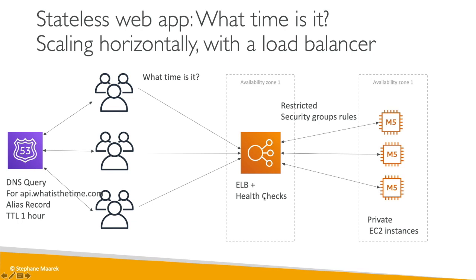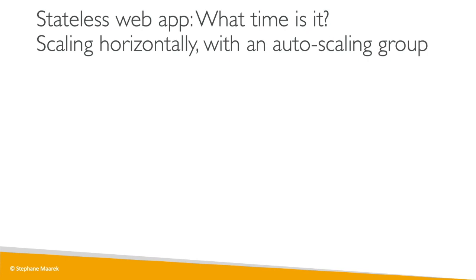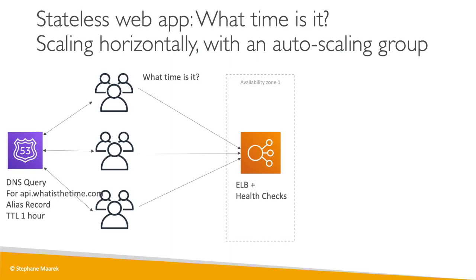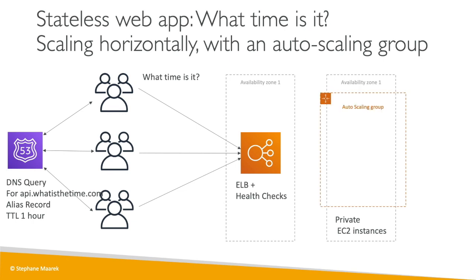Adding and removing instances manually is pretty hard. So let's leverage an auto scaling group. We have the same Route 53 and ELB on the left, but on the right we launch private EC2 instances managed by an auto scaling group in an availability zone. This allows the ASG to scale on demand — maybe in the morning no one wants to know the time, but at night they do. So we scale in and scale out based on demand.